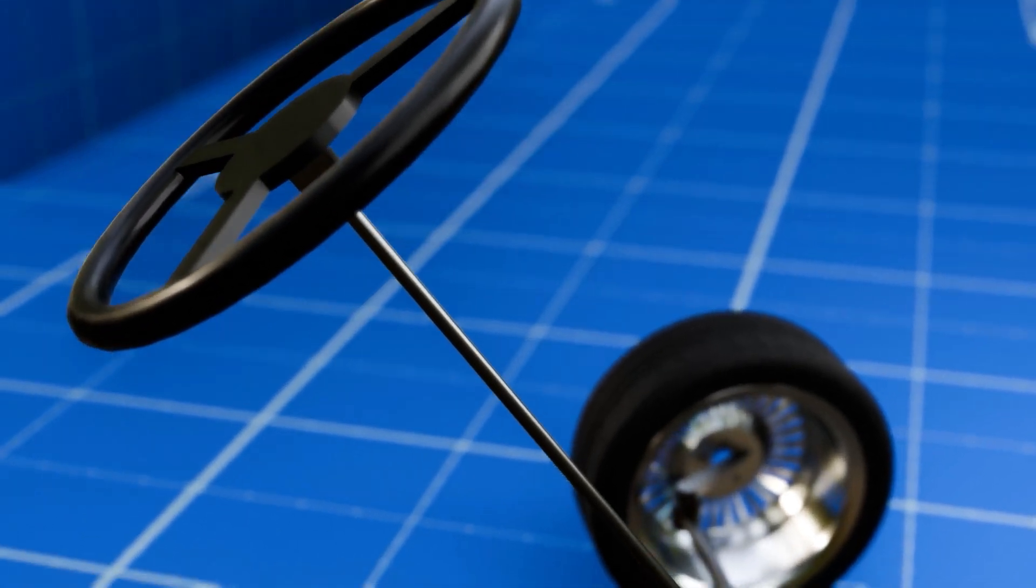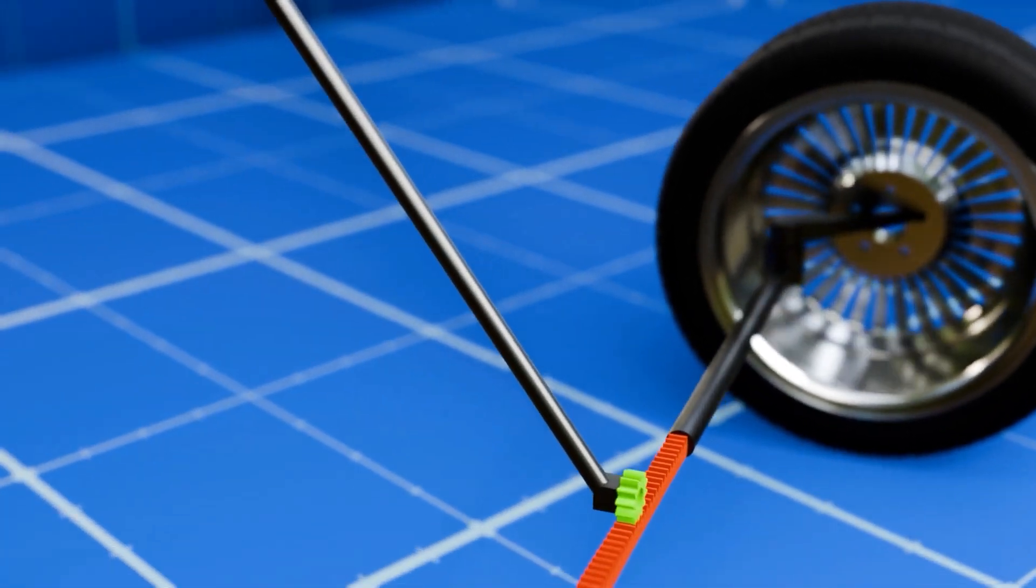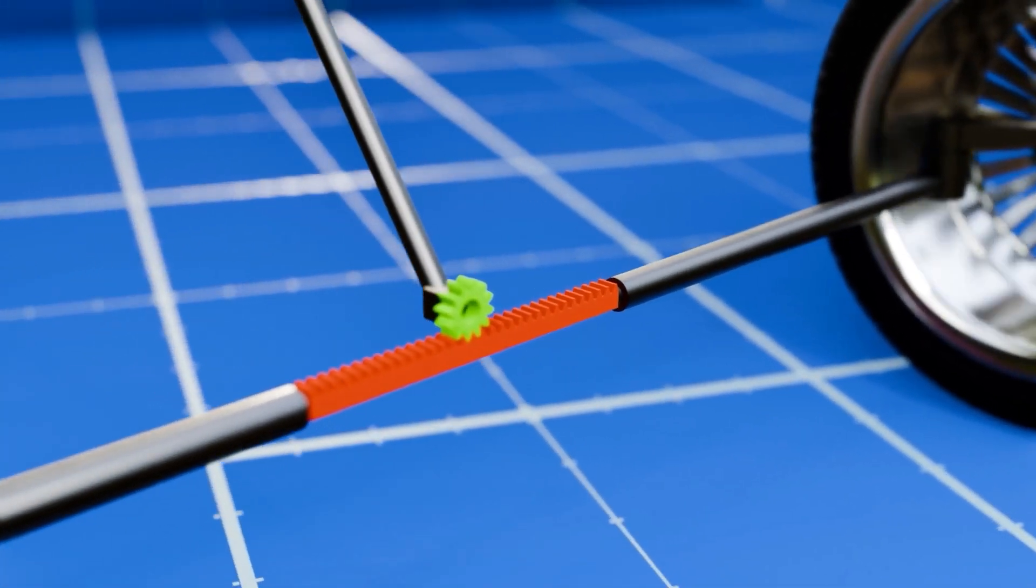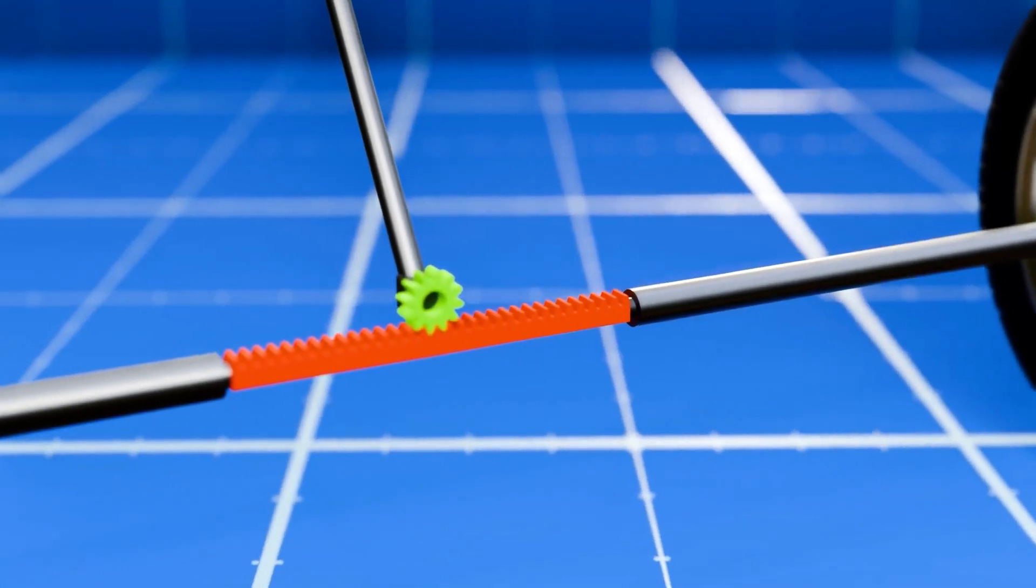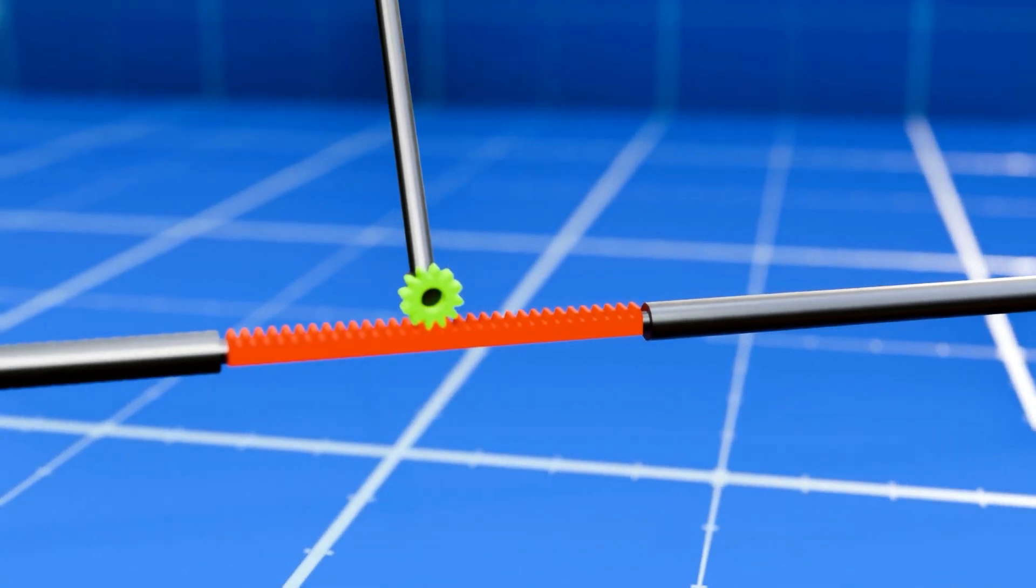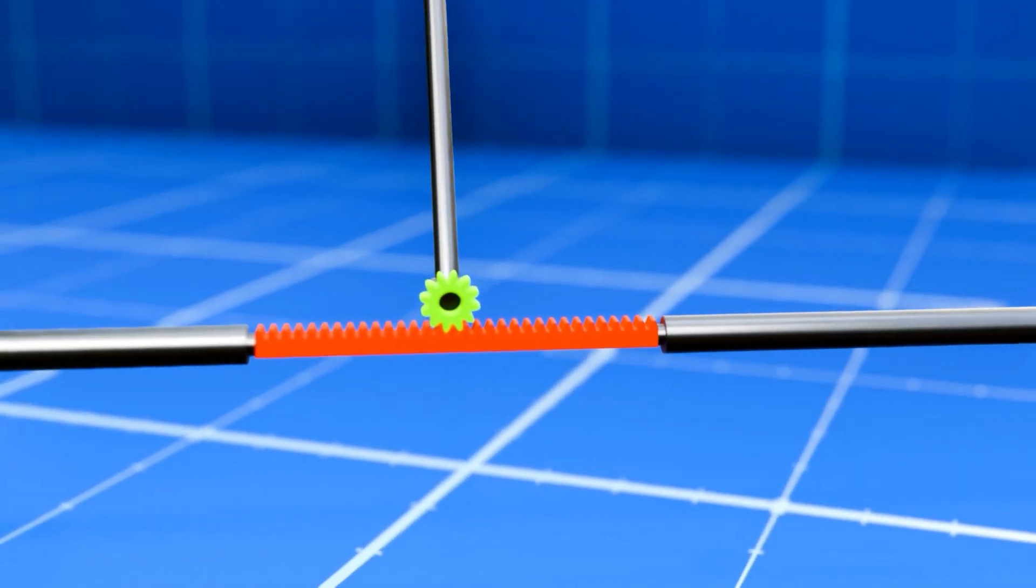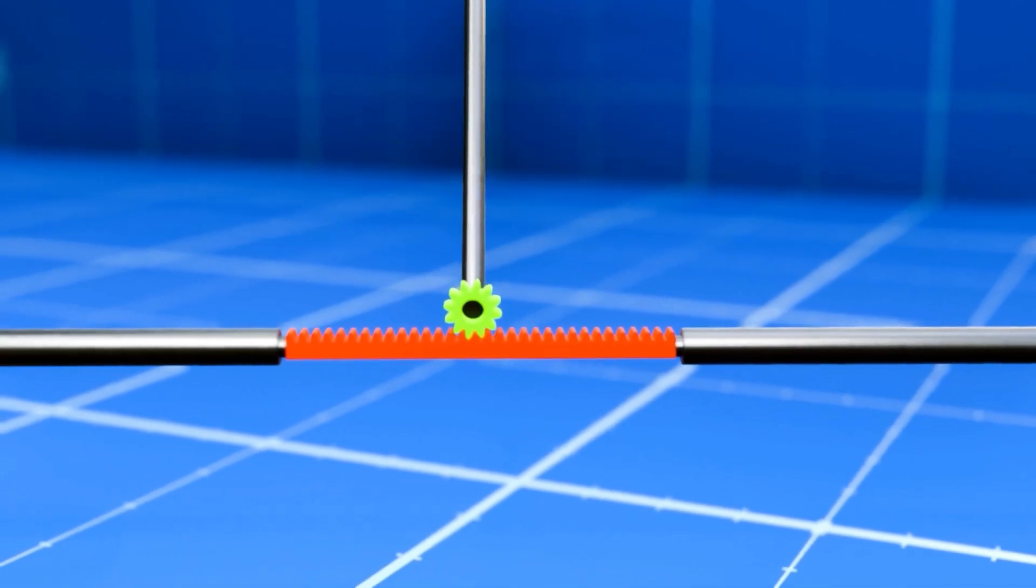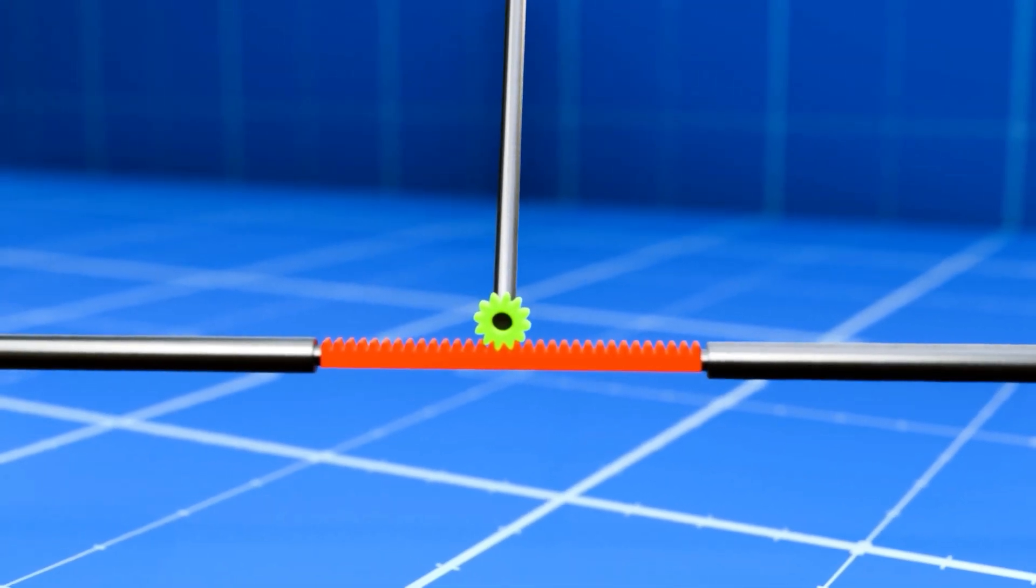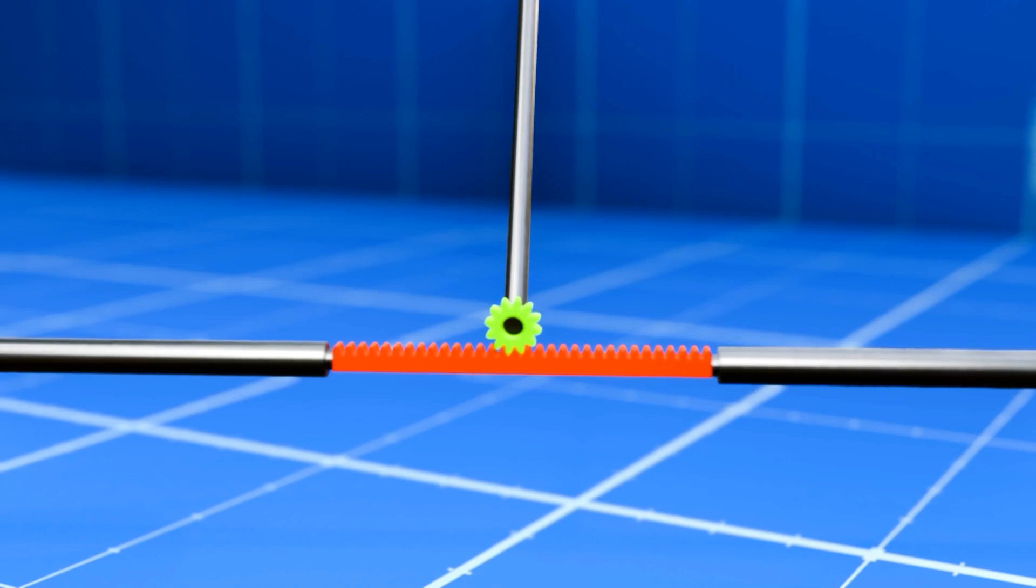Turning the steering wheel rotates a shaft connected to the pinion gear. The pinion meshes with the rack, a straight bar of teeth. As the pinion rotates, it pushes or pulls the rack side to side, which in turn moves rods connected to the wheels, causing them to turn.